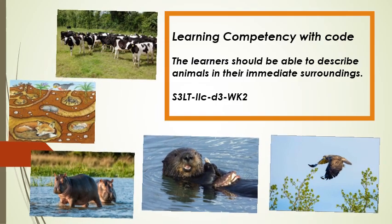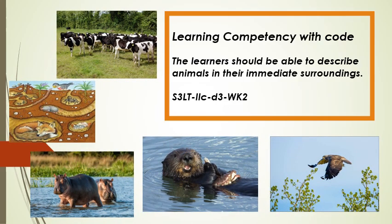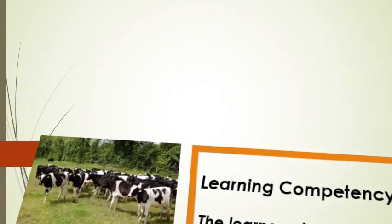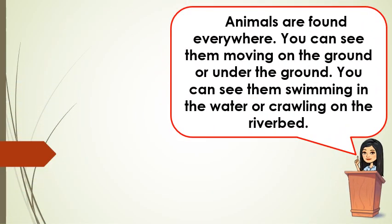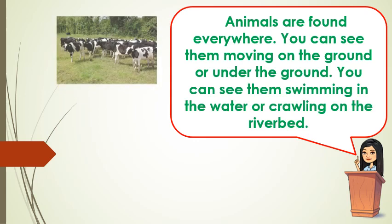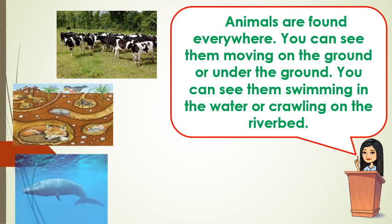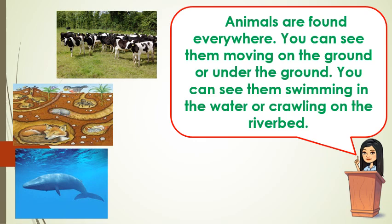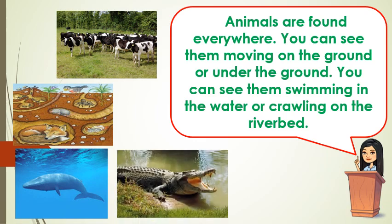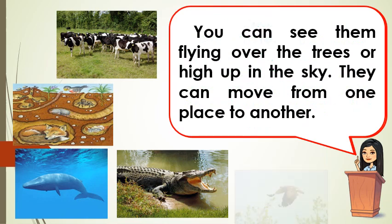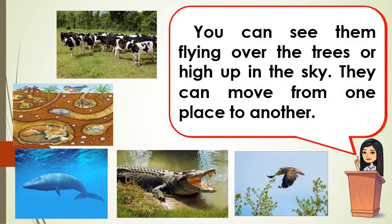In their immediate surroundings, animals are found everywhere. You can see them moving on the ground or under the ground. You can see them swimming in the water or crawling on the riverbed. You can see them flying over the trees or high up in the sky. They can move from one place to another.